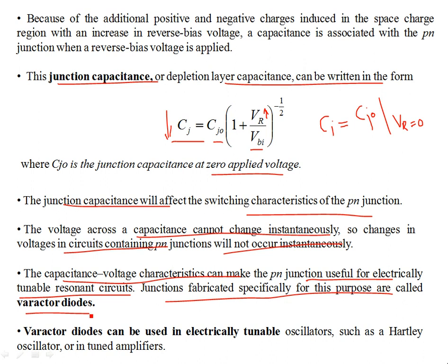Varactor diodes are special purpose diodes. Varactor diodes can be used in electrically tunable oscillators like Colpitts oscillators, or in tuned amplifiers. For example, they can be used in radio amplifiers for tuning into a certain radio station. These PN junctions give very special properties to semiconductor devices like diodes, transistors, and special purpose diodes which can be used in such tuning applications.